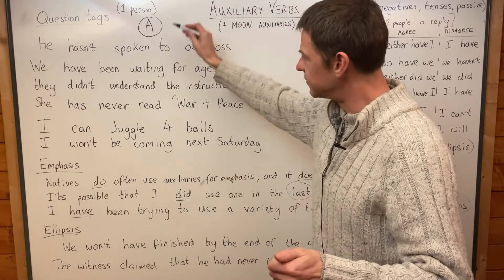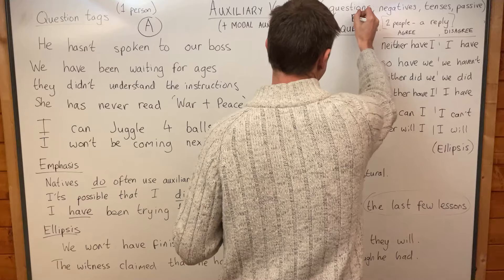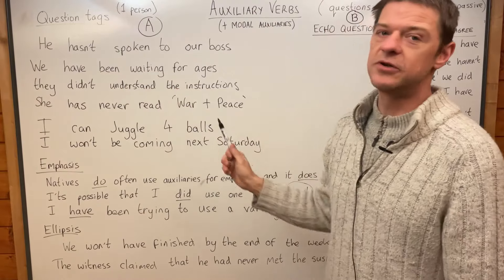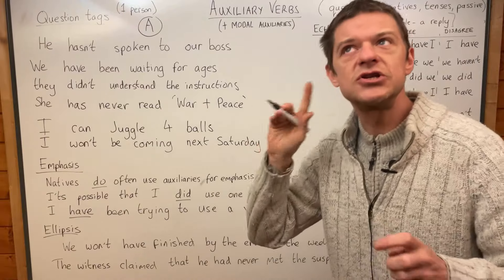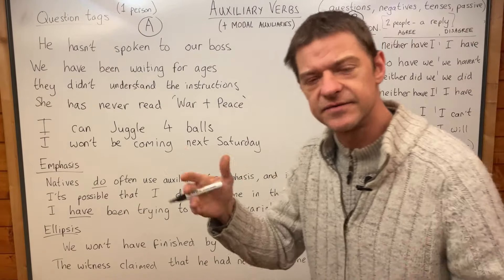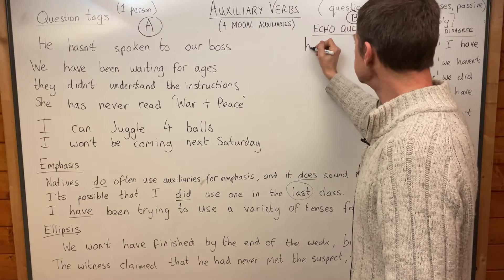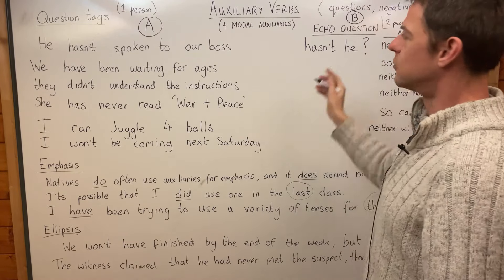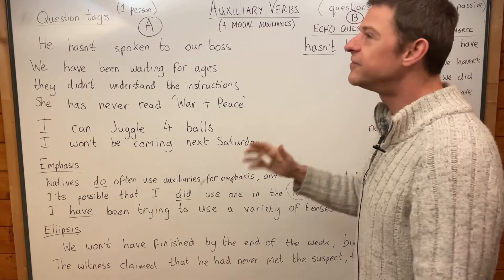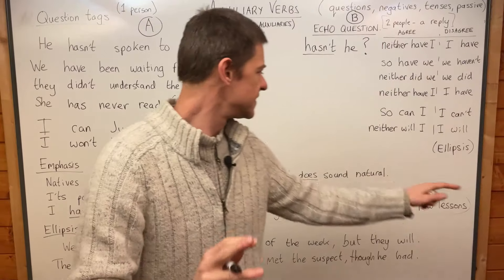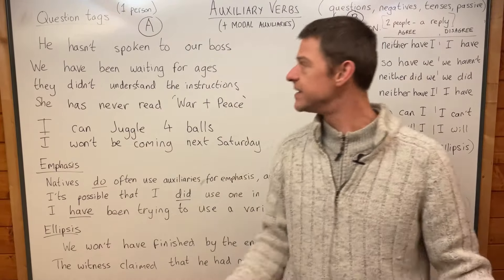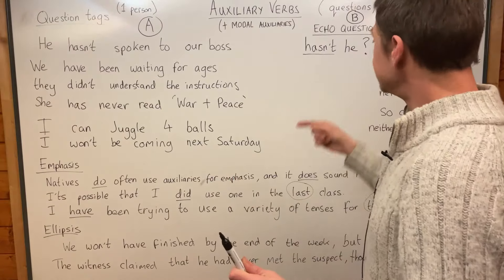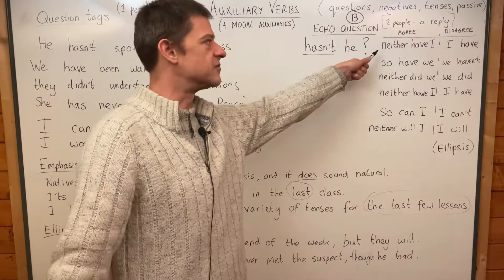All of those are person A, and this is person B. If somebody says 'He hasn't spoken to our boss' and you want to check that information — to say 'is that the case, is that true?' — you just say 'Hasn't he?' with a question. It's an echo question. Notice the auxiliary saves you from saying the rest of the sentence — a form of ellipsis. 'Hasn't he?' means 'Hasn't he spoken to the boss?'